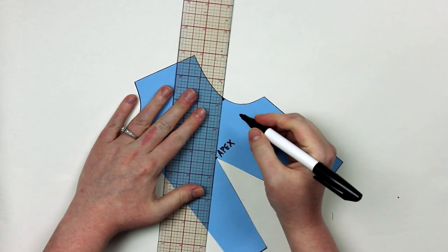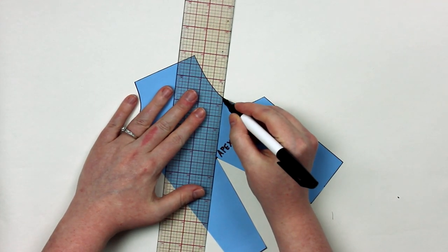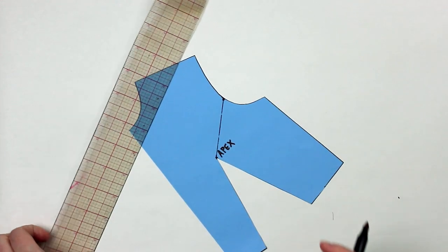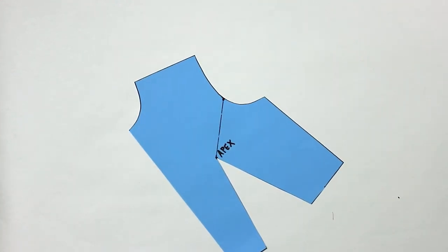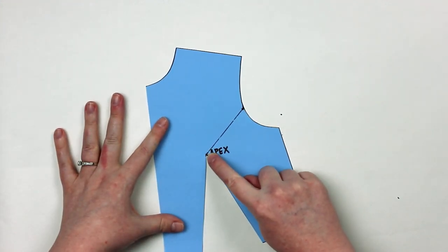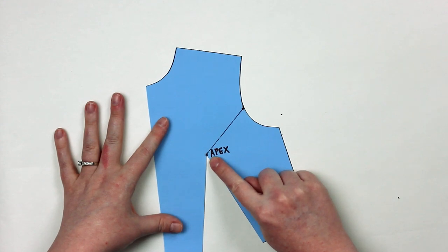You can do this technique regardless of where you're rotating your dart to. The first thing you're going to do is draw a line from your apex to wherever you want your dart opening to be. Once you've done that, you're going to take your scissors and cut to, but not through, your apex.